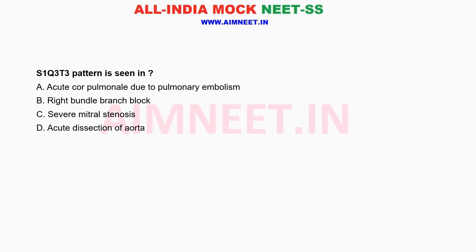S1-Q3-T3 pattern is seen in: A. Acute cor pulmonale due to pulmonary embolism. B. Right bundle branch block. C. Severe mitral stenosis. D. Acute dissection of aorta.